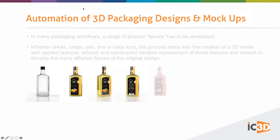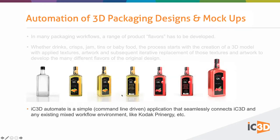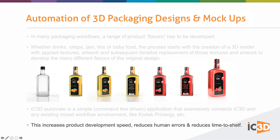You would create a structural file in IC3D, add your shrink films or security closures around the neck and top of the bottle, place labels on the front and back, put in the single liquid flavor — and then use Automate to replace any of those artworks. It's a simple command-line driven application that seamlessly connects IC3D with any existing workflow tool you have, like Kodak Prinergy, Hybrid's Cloudflow, or Esko WebCenter. It's the glue between those workflow solutions and IC3D, helping to increase product development speed, reduce human errors, and improve time to shelf.